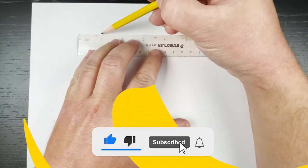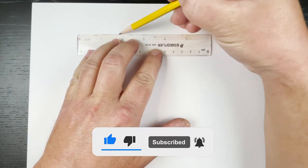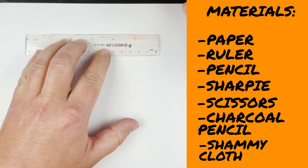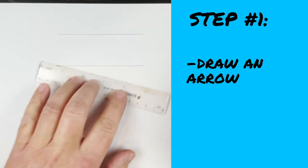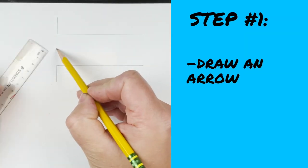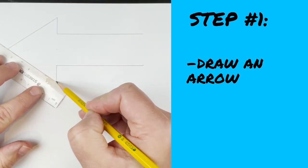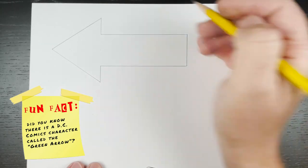But before we get started, please hit that subscribe button, turn on your notifications, and let's go ahead and get started. Today's project, we're going to start out with a basic piece of paper, a ruler, and a pencil. The first thing you're going to do is draw a simple arrow.